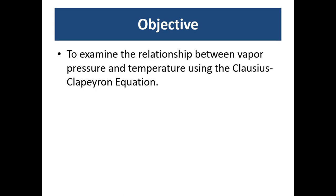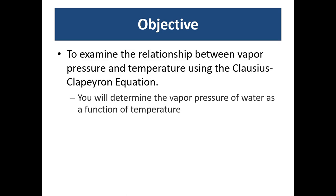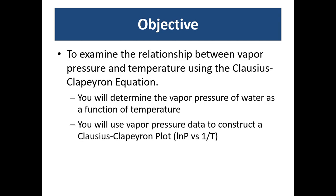So our objective is to examine the relationship between vapor pressure and temperature using the Clausius-Clapeyron equation, specifically for water. We're going to determine the vapor pressure of water as a function of the temperature. Then we're going to use the vapor pressure data to construct a Clausius-Clapeyron plot, which is log of P versus one over T. And using the graph, and specifically the slope of that line, you determine the enthalpy of vaporization of water.